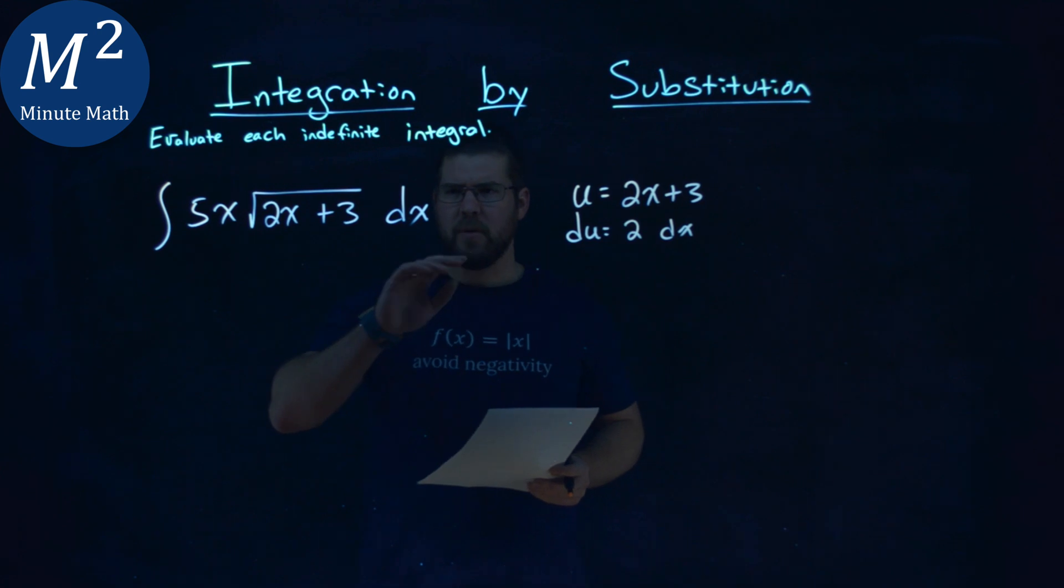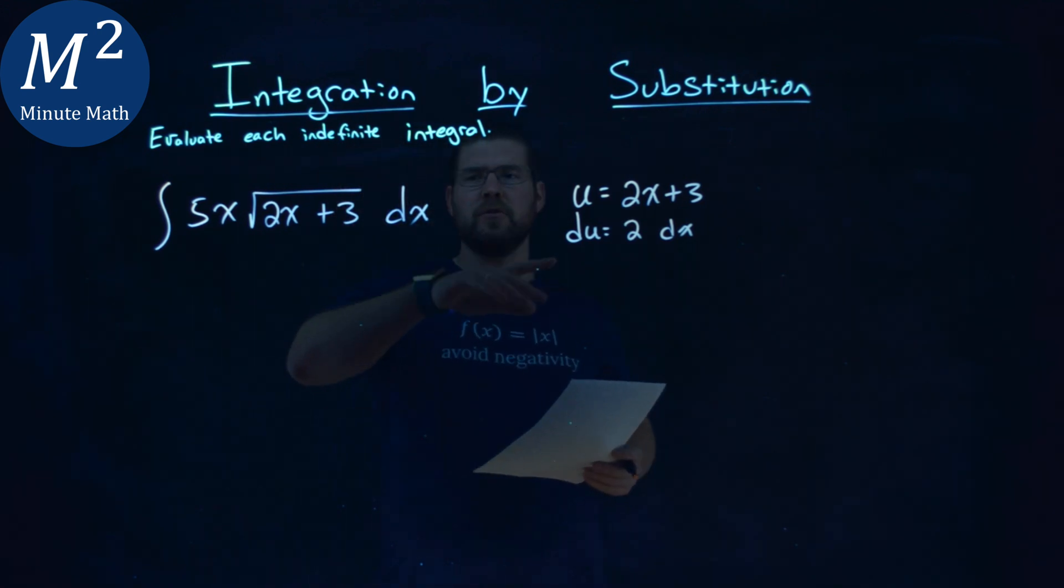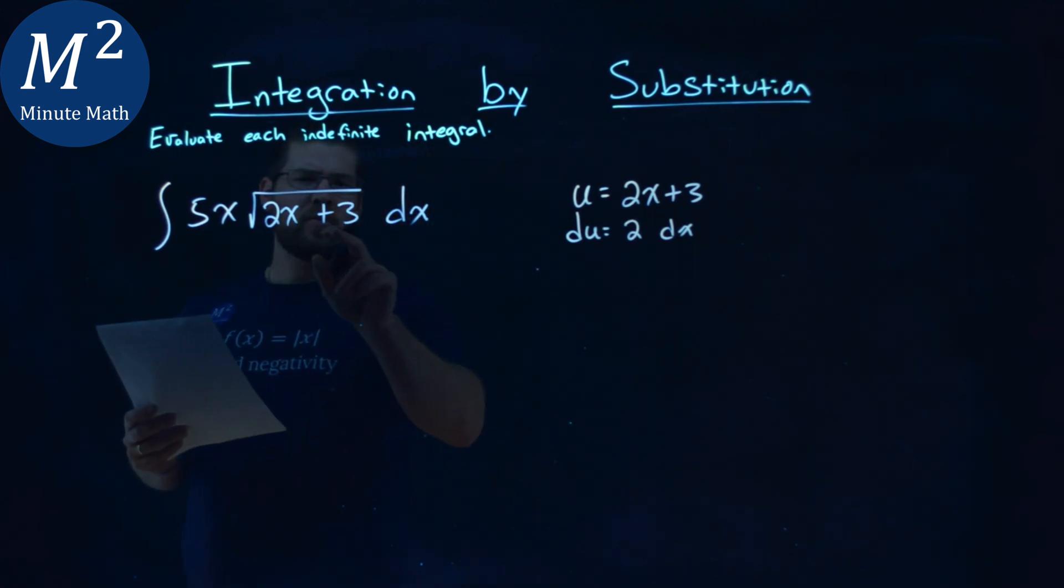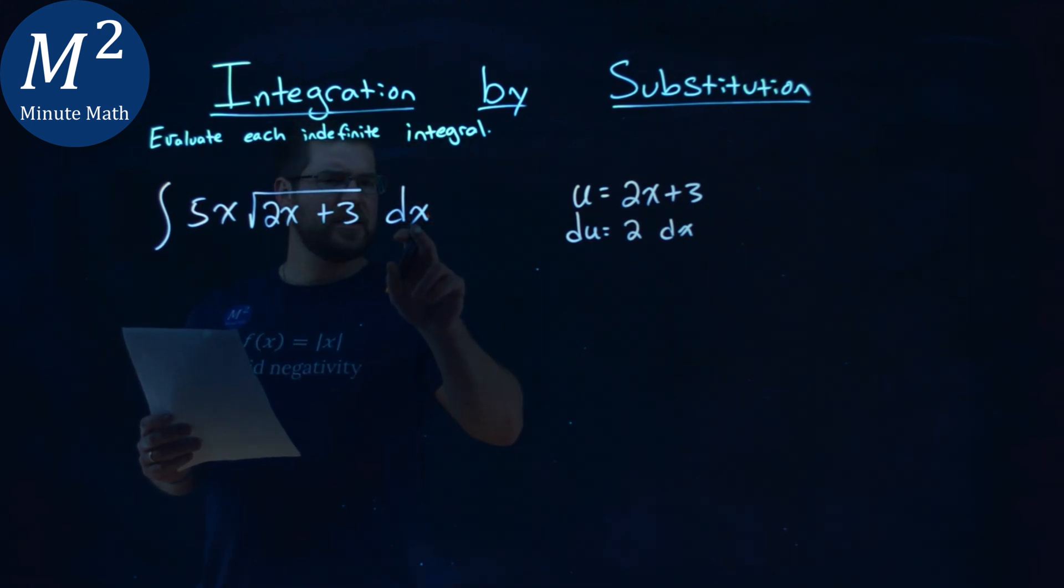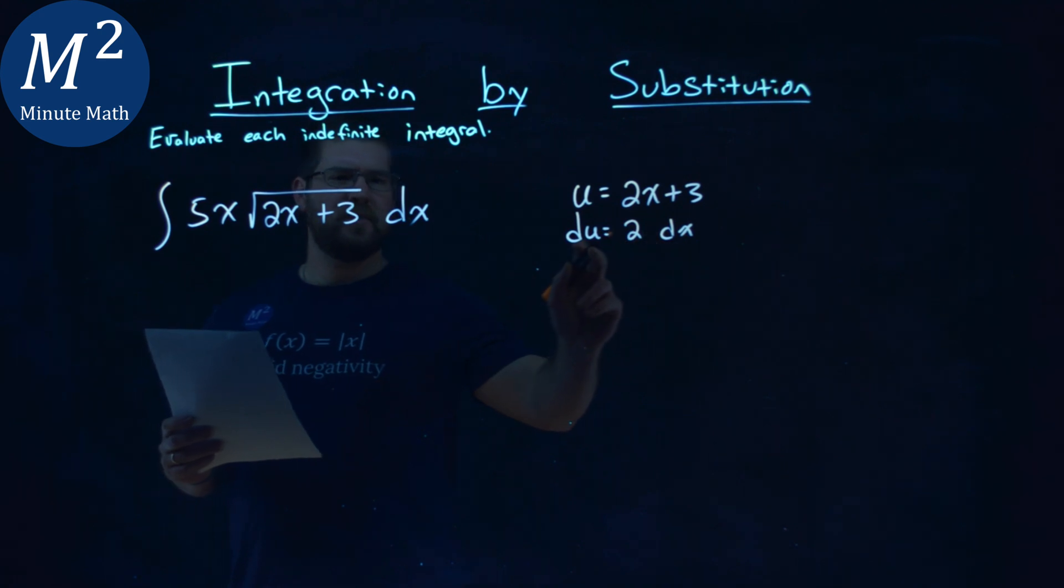Okay. So I want to see if I can rewrite this in terms of u and du's. Inside the square root's easy. That's an easy u to find. Now, my dx here, well, I have a 2 dx is du.